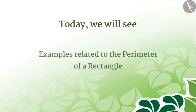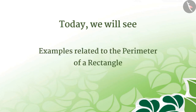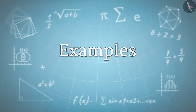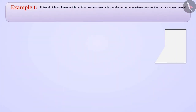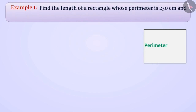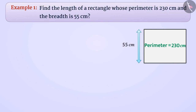We will see some examples related to the perimeter of a rectangle. A rectangle whose perimeter is 230 cm and breadth is 55 cm — find the length of this rectangle.